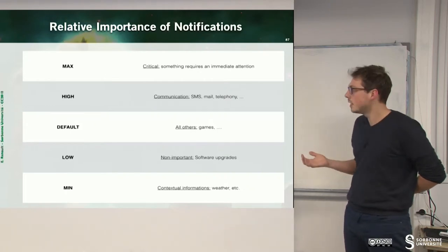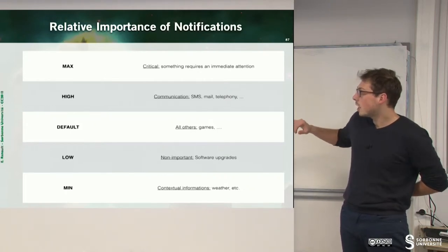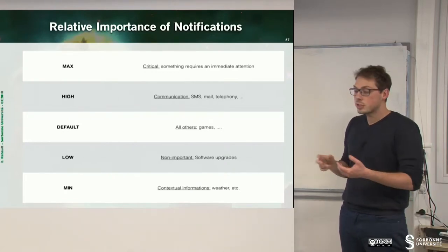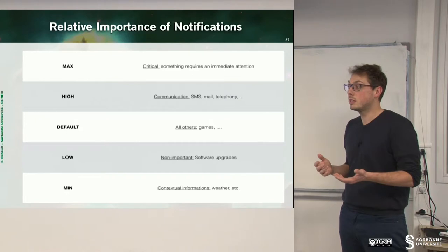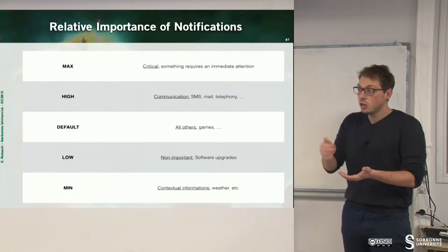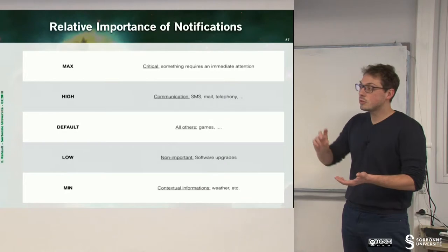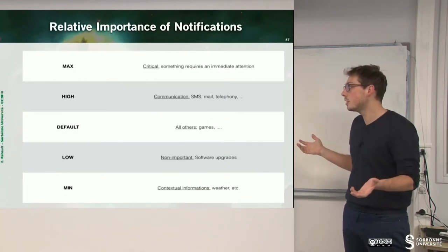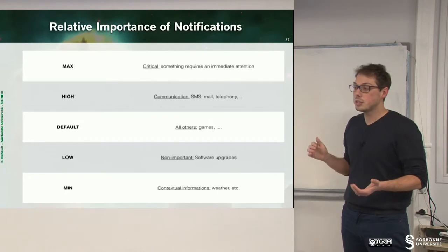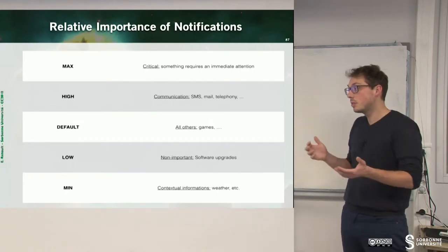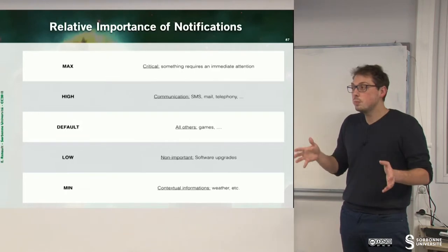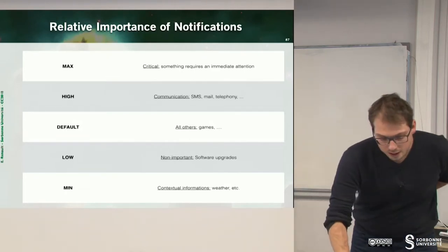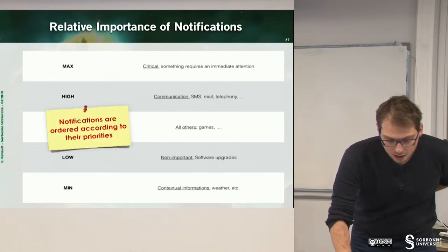Otherwise you have minimal information, which is contextual information - for example, it's raining. Or you can have low notifications, such as a software upgrade where you may choose to upgrade your system to the latest version. And all other applications use default notifications. So if you develop a game, your notification should be a default notification.